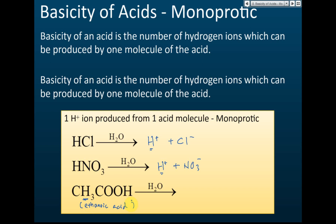Ethanoic acid has four hydrogen atoms — three in one part and one in another — but when this acid dissolves in water, it will only form one hydrogen ion. The other three hydrogens do not dissociate from the molecule; they remain part of the molecule. Only one hydrogen ion is produced and dissociates, therefore ethanoic acid is called a monoprotic acid.